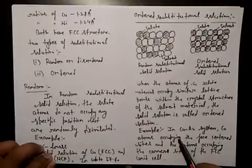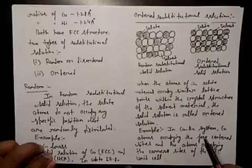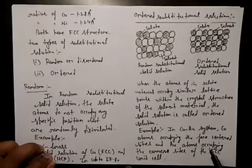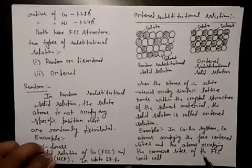Its example is, for example, in a copper aluminum system, copper atoms occupying the face center sites and aluminum atoms occupying the corner sites of the FCC unit cell.